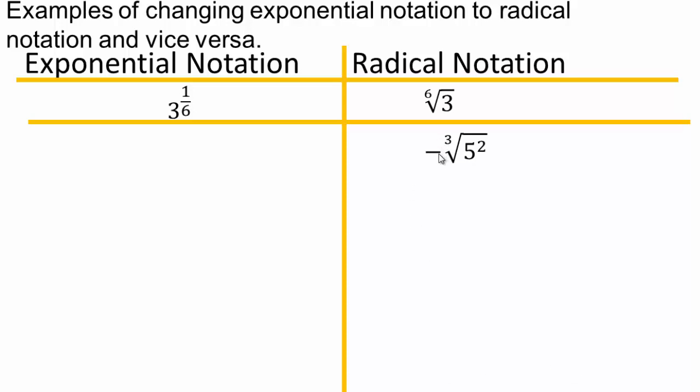So negative is going to stay on the outside. You have five to the what? Five to the two-thirds. The three is the index, which is the denominator of the exponent, and two is the numerator of the exponent, and the negative stays on the outside.